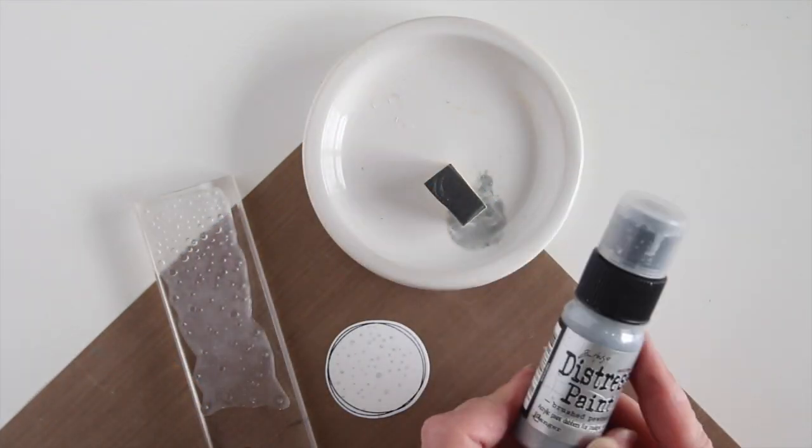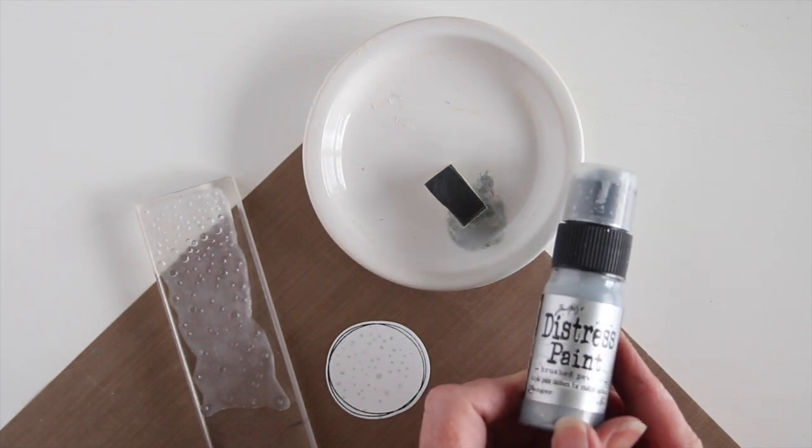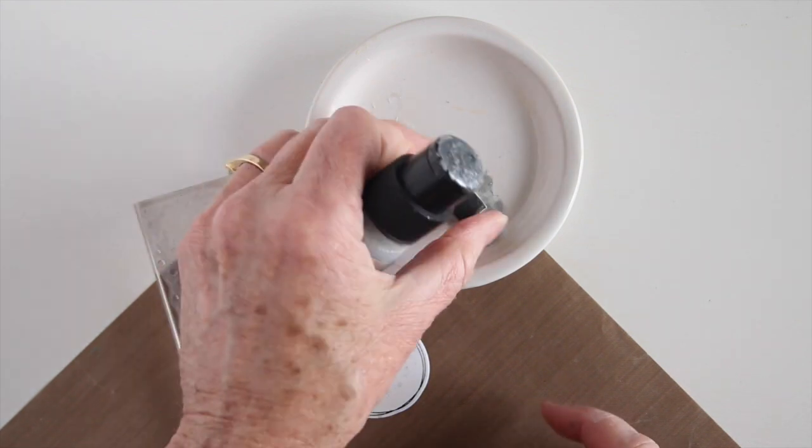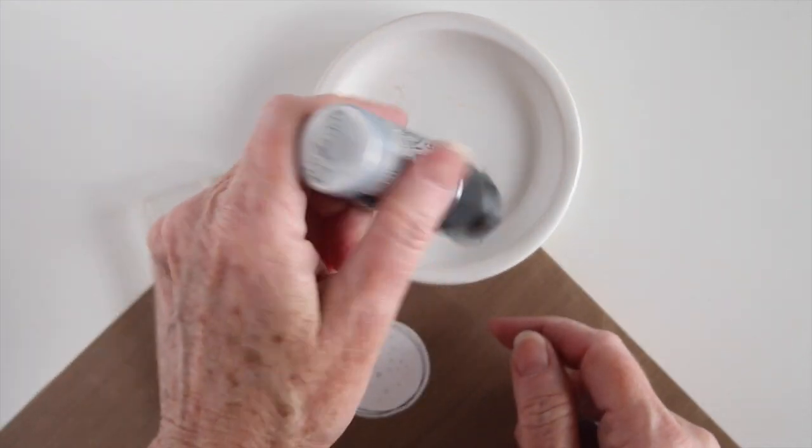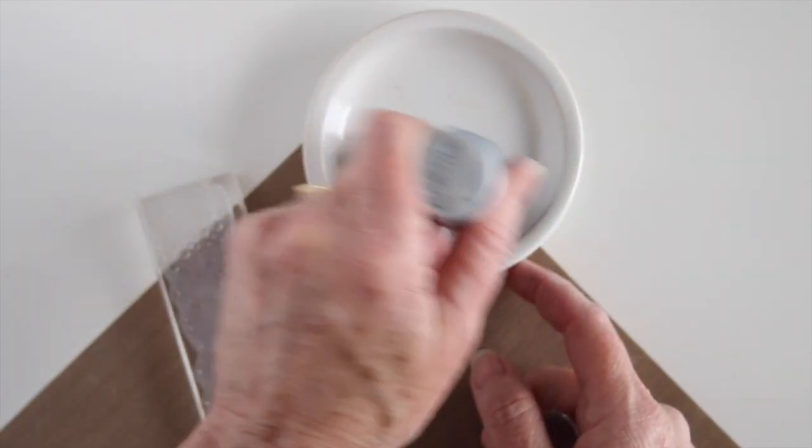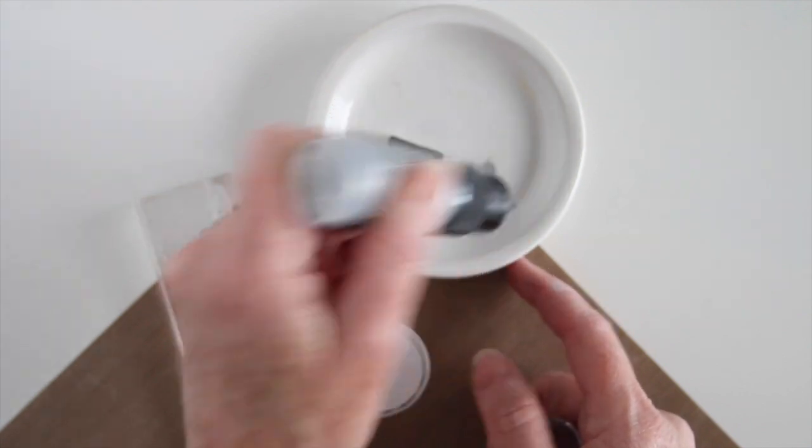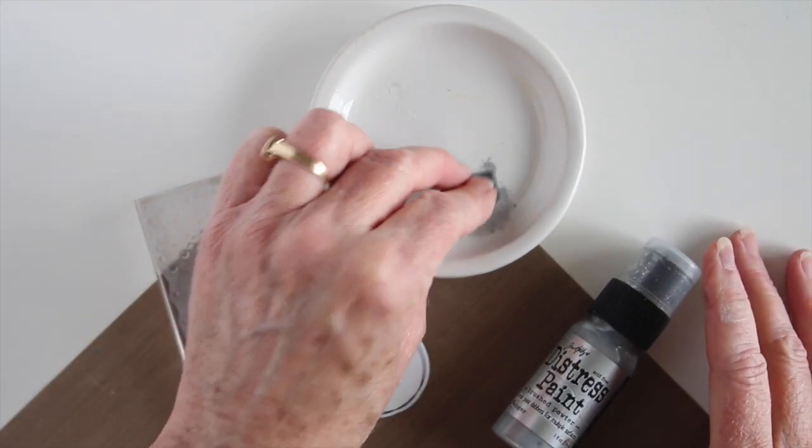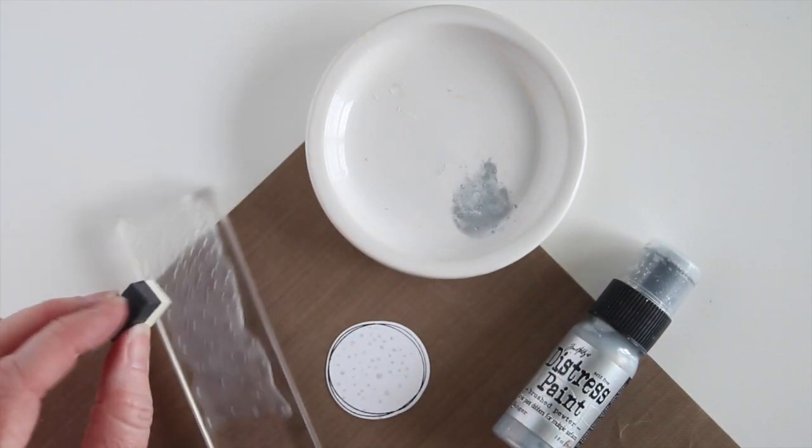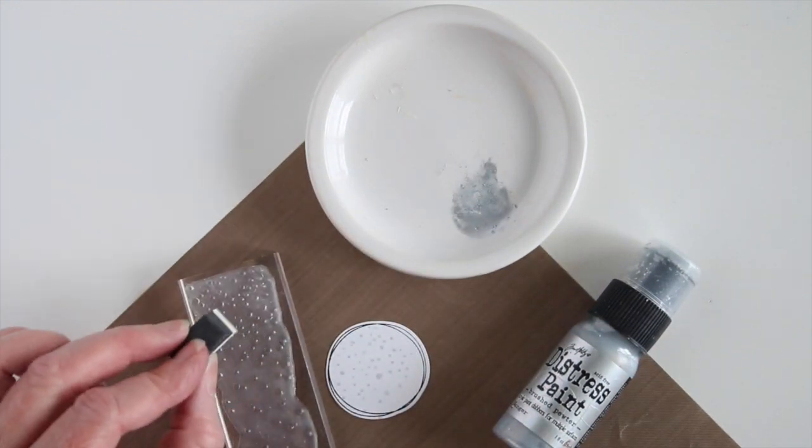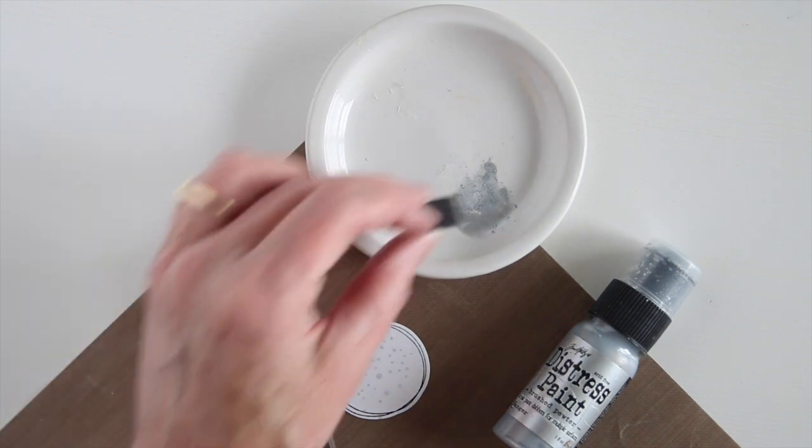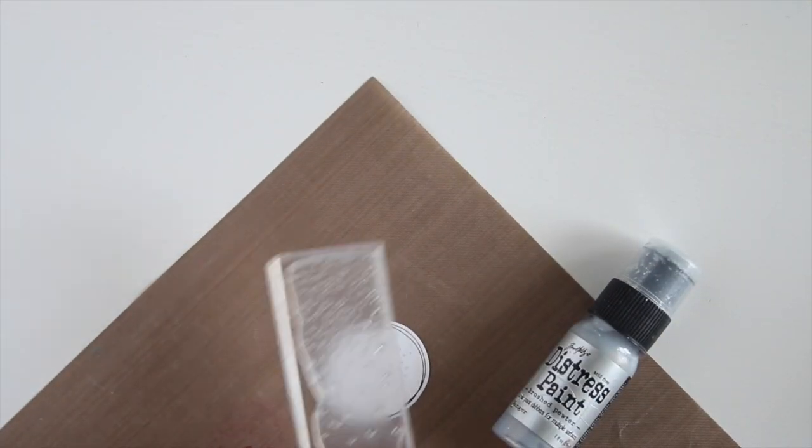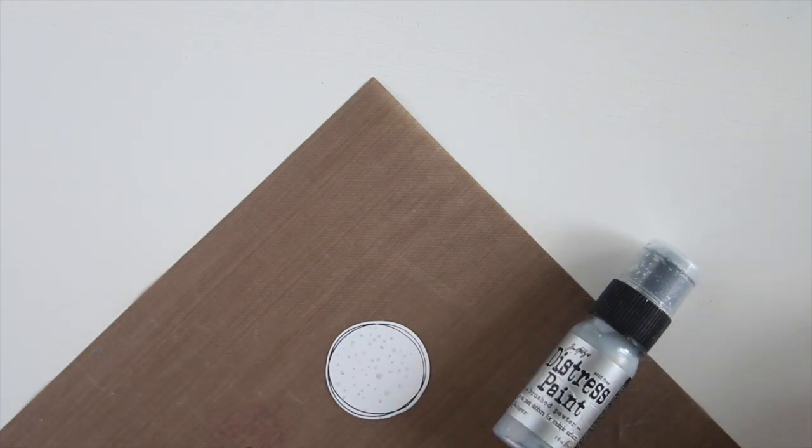Acrylic paints can also be used as a barrier between your inks and your paper. And here I have the Tim Holtz Brushed Pewter Distress Paint. And how I use this is I go ahead and put some down into a bowl or on a plate. And then I use a piece of cut and dry foam. And I pick up some of the paint and then I go ahead and apply it to my stamp. I don't use the paint directly to the stamp. It would be too much. But once I'm happy with the paint I go ahead and stamp it onto my paper.